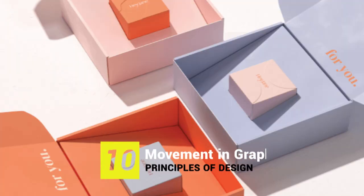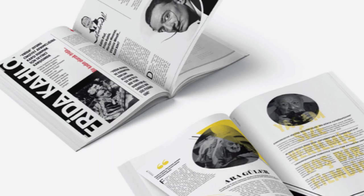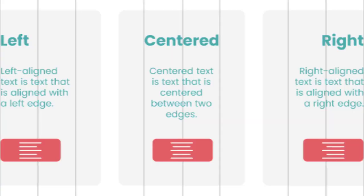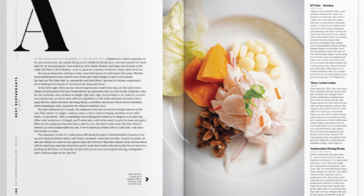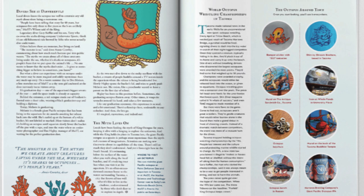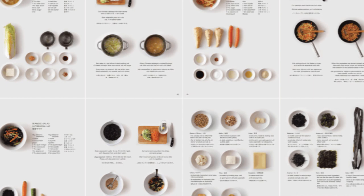The first principle of design is alignment. Alignment refers to how different parts of a design are lined up in relation to each other. You can deliberately break alignment to grab attention. Without alignment, the elements in your design will look disorganized, confusing, and cluttered.